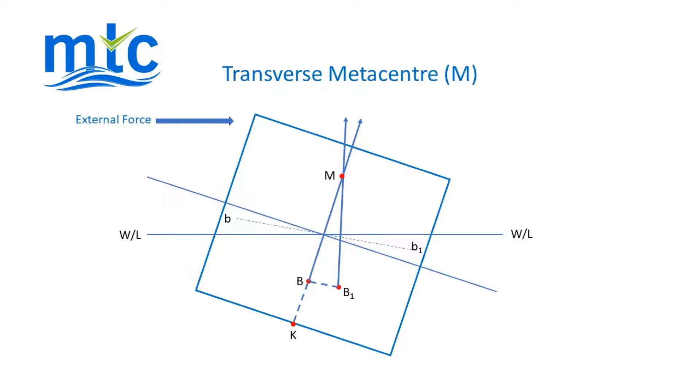Little b to little b1. The resultant movement of big B to big B1 at the same time is parallel and in the same direction as little b to little b1 and is the centre of the new underwater volume of the vessel.